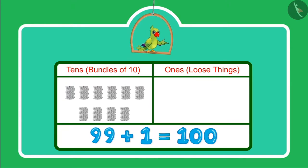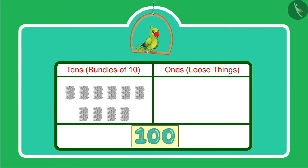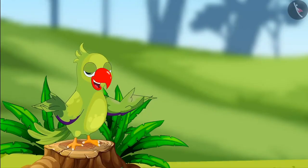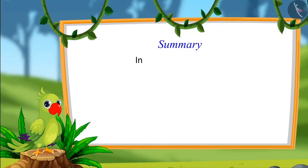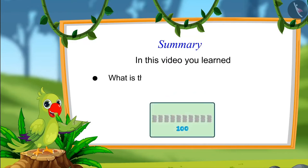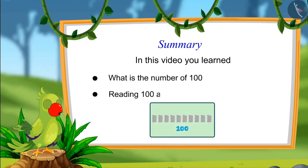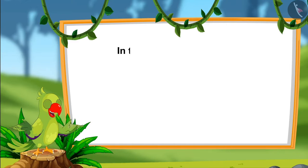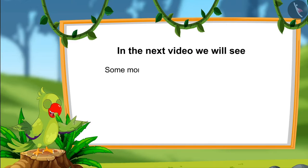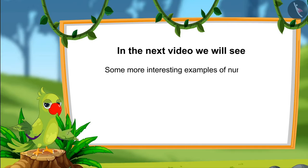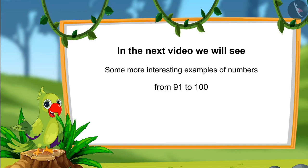So a hundred comes after 99, which we write like this. In this video, you learned about 100 and learned to read 100 as ones and tens. In the next video, we will see some more interesting examples of numbers from 91 to 100. Till then, bye children!